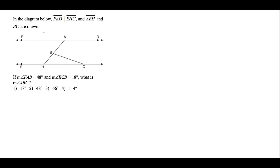For the second question, we have another pair of parallel lines — lines FAD and EHC. Segment ABH and segment BC are drawn. Angle FAB is 48 degrees, and the measure of angle ECB is 18 degrees. We want to find the measure of angle ABC, which we'll call X.